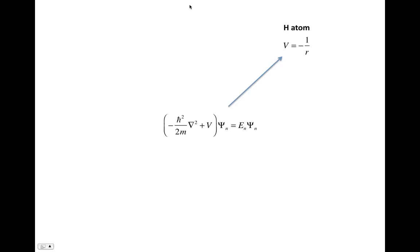So that's the Schrodinger equation. The Schrodinger equation for the hydrogen atom would be this kinetic energy operator minus one over R, where R is the distance between the electron and the proton.